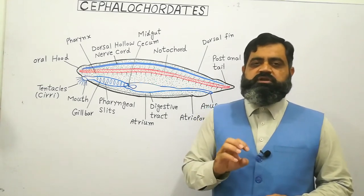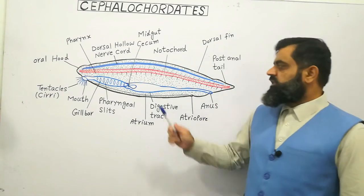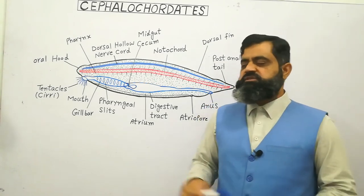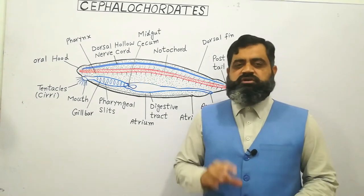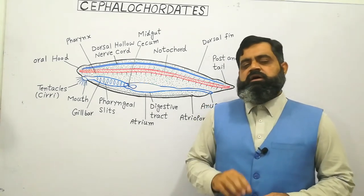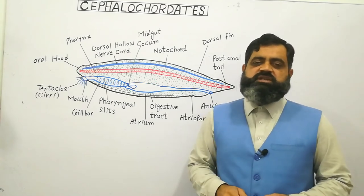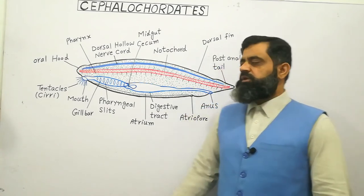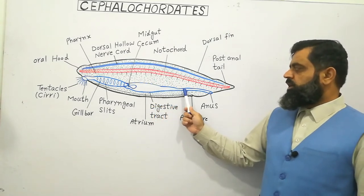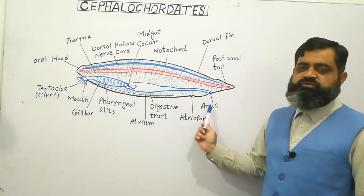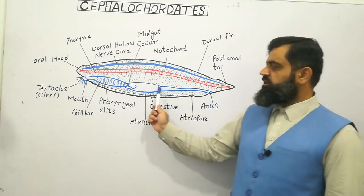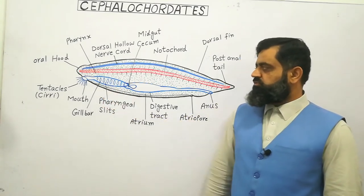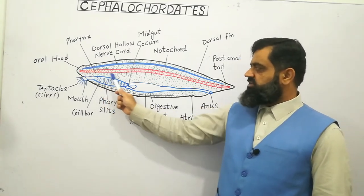These food particles trapped by the string of mucus enter into the digestive tract, where the mucus string is rotated and the food particles are dislodged from it. There is a small projection known as the midgut cecum which helps to produce enzymes; extracellular digestion takes place within the gut. Some digestion also takes place at the cellular level, known as intracellular digestion. After digestion, food is absorbed and assimilated into the body, and the remaining undigested food is transported into the hindgut, which opens outside through a pore known as the anus.